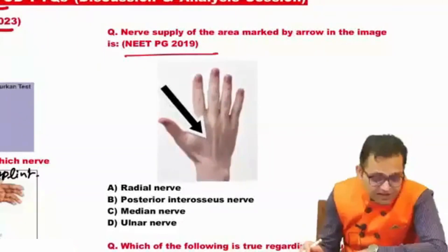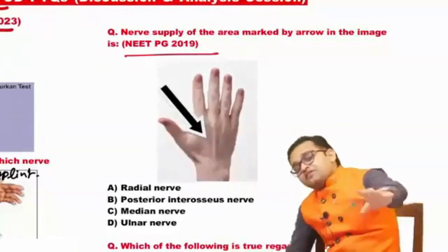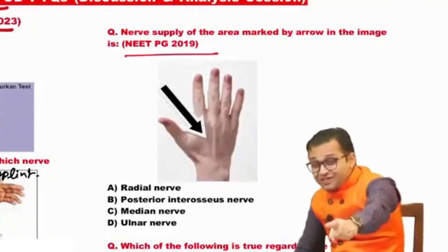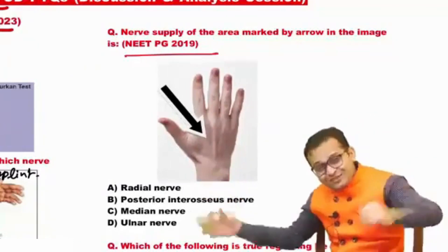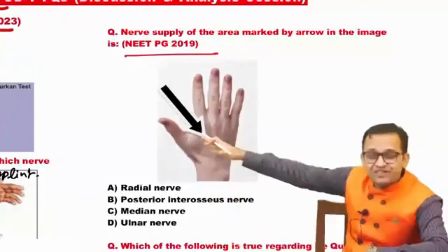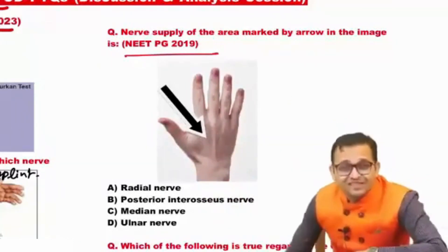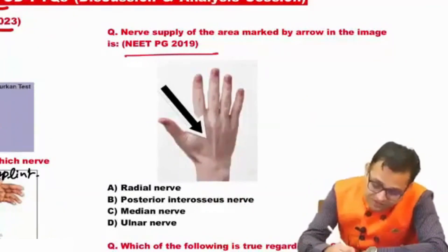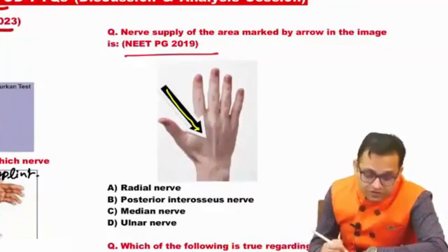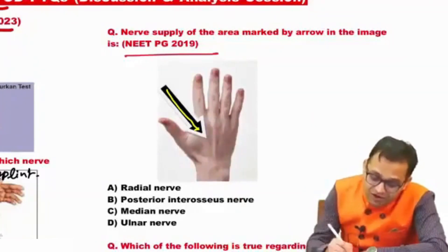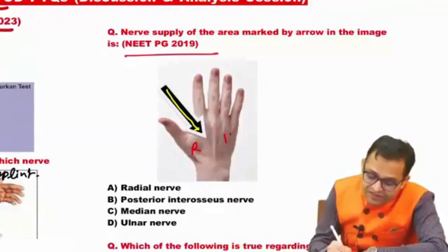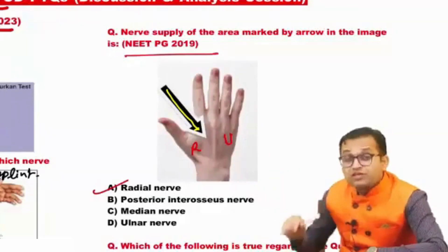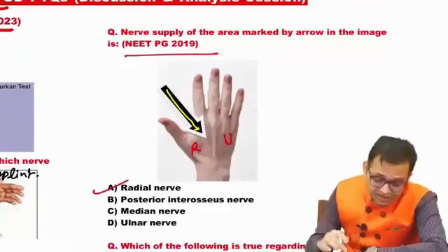NEET PG 2019: nerve supply of the nerve marked by the arrow in the image. This area is the radial nerve, and here you can see the ulnar nerve. So the answer is the radial nerve. We have to study the dermatome. So the next topic is dermatome.